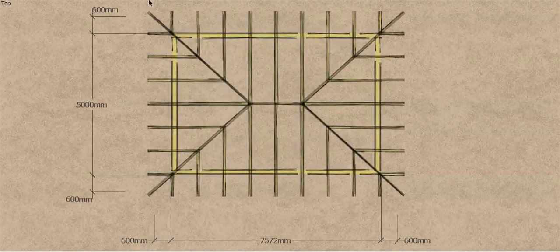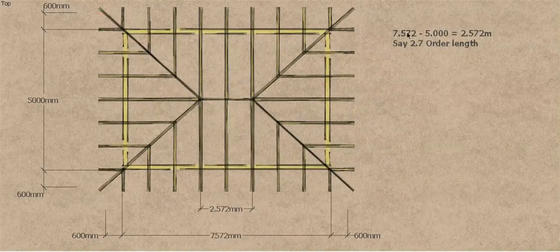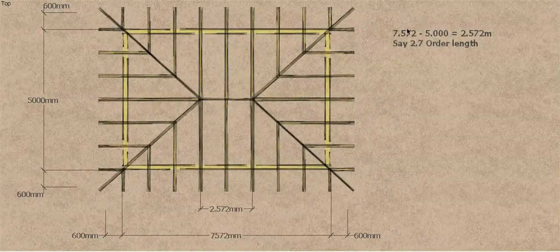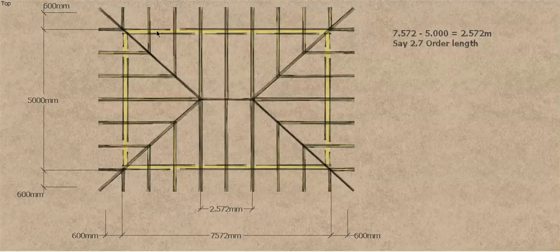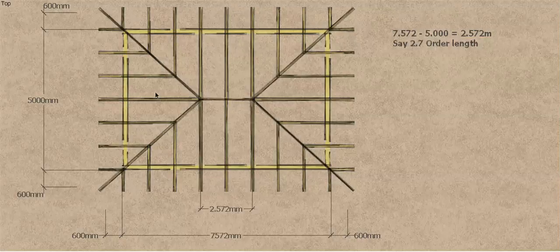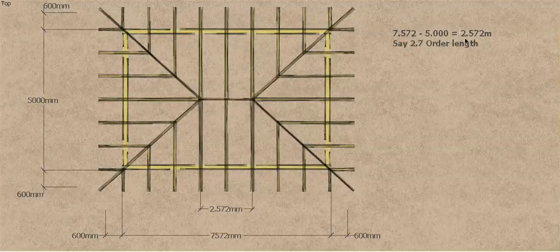So looking at our frame view, if we take the length of our building 7.572 minus 5 meters, which we're getting that from this distance, and doing it again on this side, so it's half span and we're using it twice, that's where we get the 5 meters from. And we get a length of 2.572.